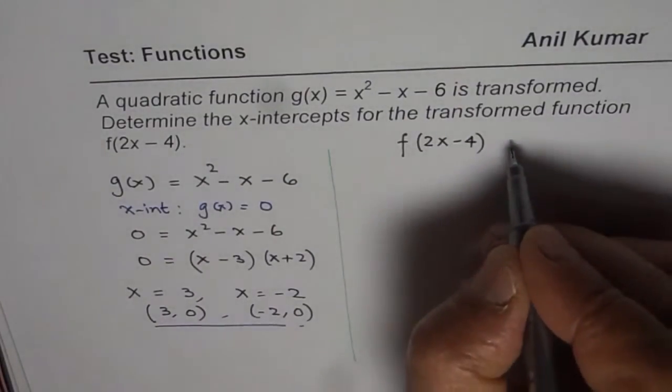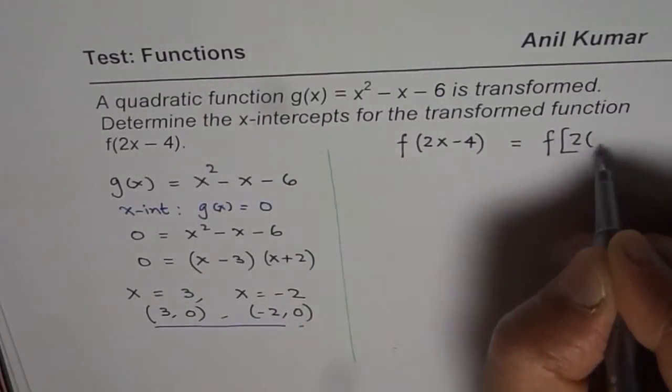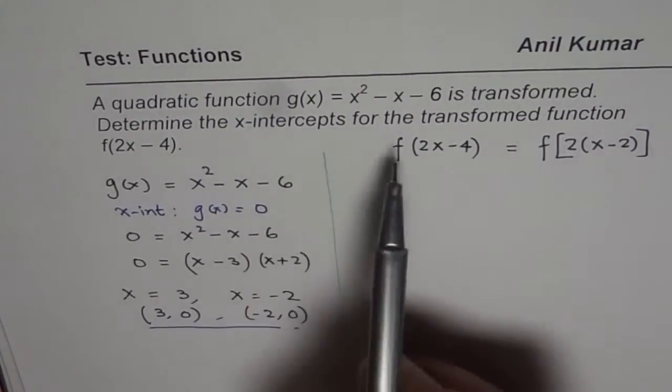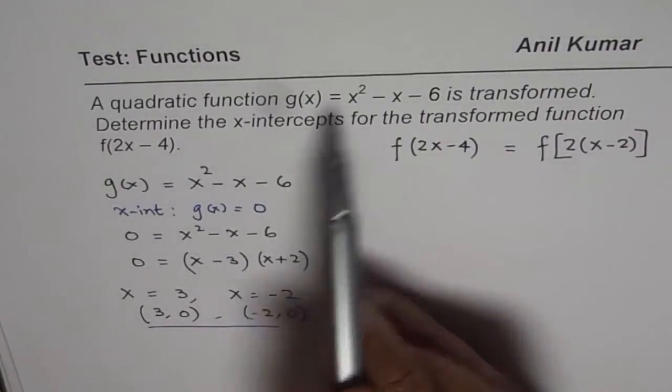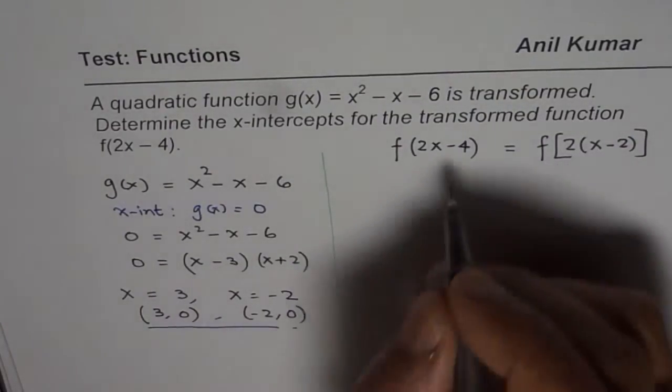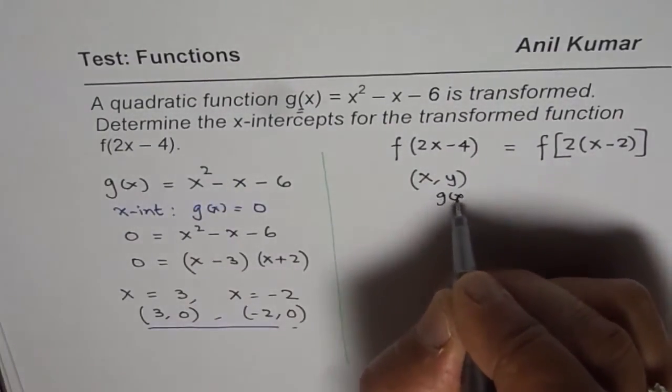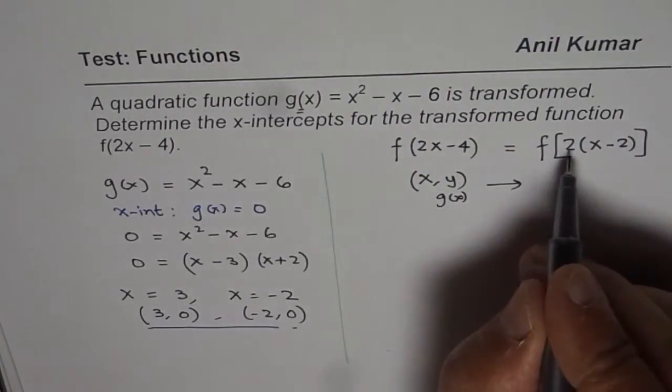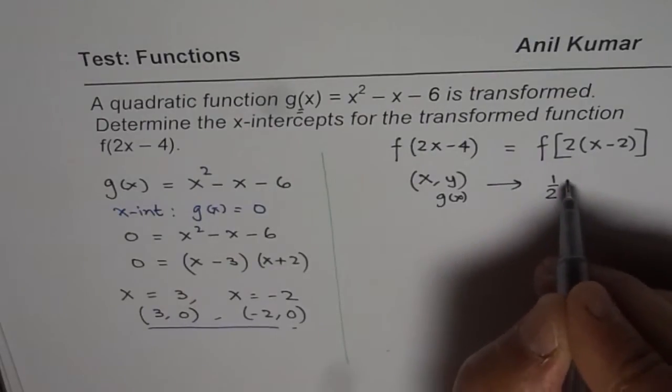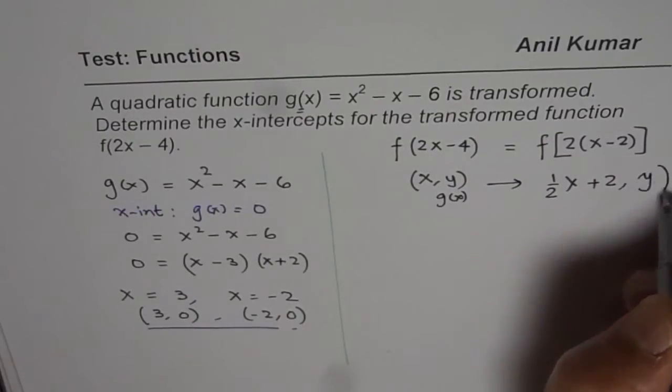First, rewrite this function as f(2(x - 2)) by factoring out 2. Comparing g(x) to the transformed function, the (x, y) points on g(x) get transformed: horizontal compression by a factor of 1/2 and shift right by 2. The y-values remain the same, so the x-intercepts will have the same y-values.